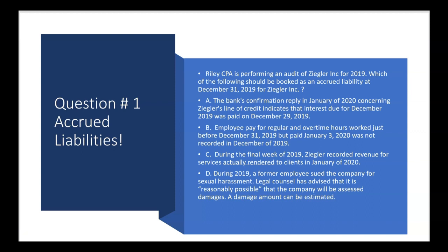That would make the auditor very happy to know they're up to date with this payment — no liability needs to be booked at year-end for this. If the interest due for December had been paid in January instead, then you would have an accrued liability that would need to be booked in December. But since the interest was paid in December, there's nothing owed. So A is out. Let's go to B.